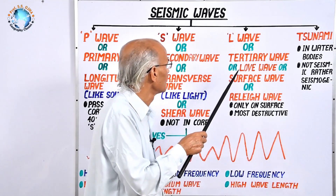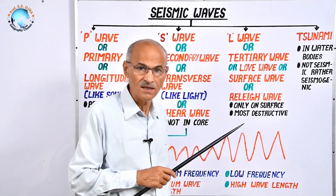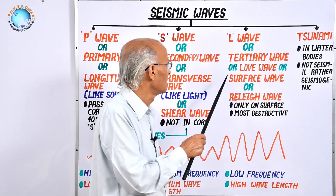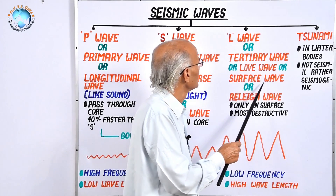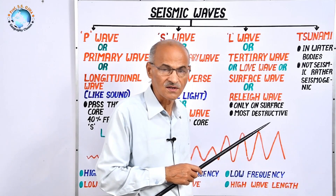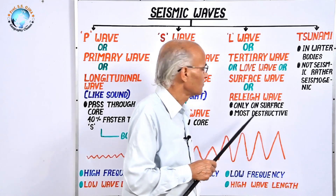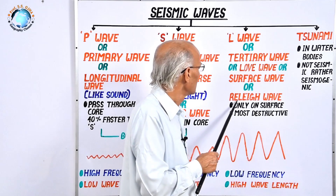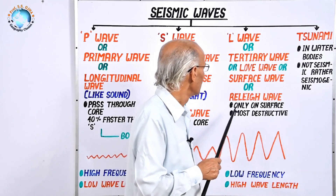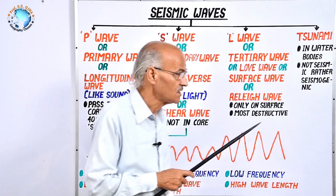These are called love waves because they were studied by Mr. Love. They are tertiary waves and are also called surface waves because they travel on the surface. There was also an eminent seismologist Rayleigh who researched on this, so it is also called Rayleigh wave. Its quality is that it travels on the surface and is most destructive.